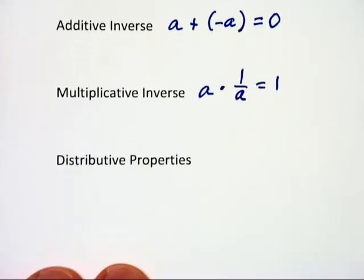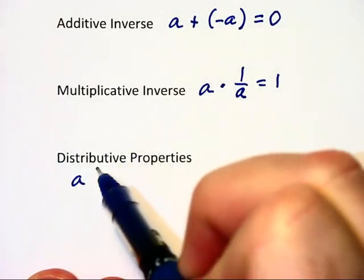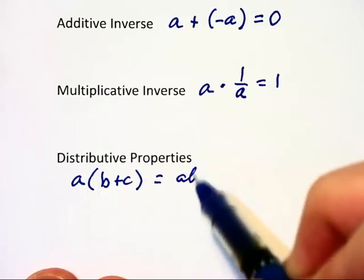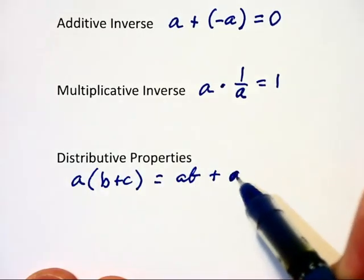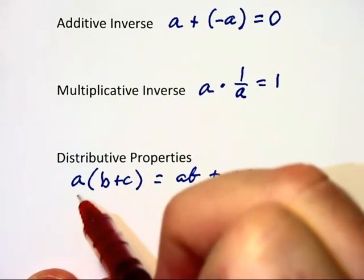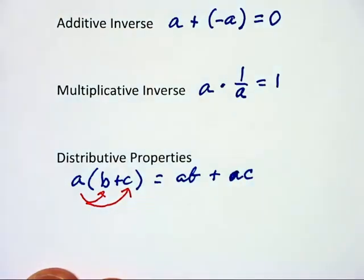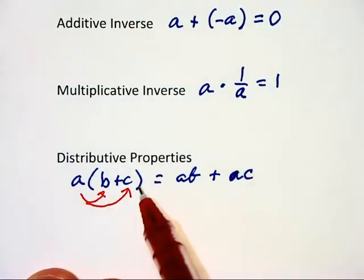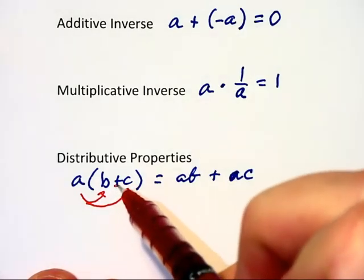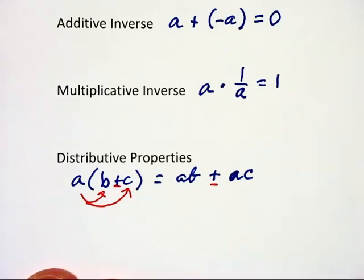The distributive property is one you'll use throughout this class. If I have a(b + c), that equals ab + ac. In other words, the a outside the parentheses multiplies both things inside the parentheses: a times b, then a times c with the addition sign between them. Likewise, if there's a minus sign between the two numbers, there would be a minus sign between the two terms on the right.